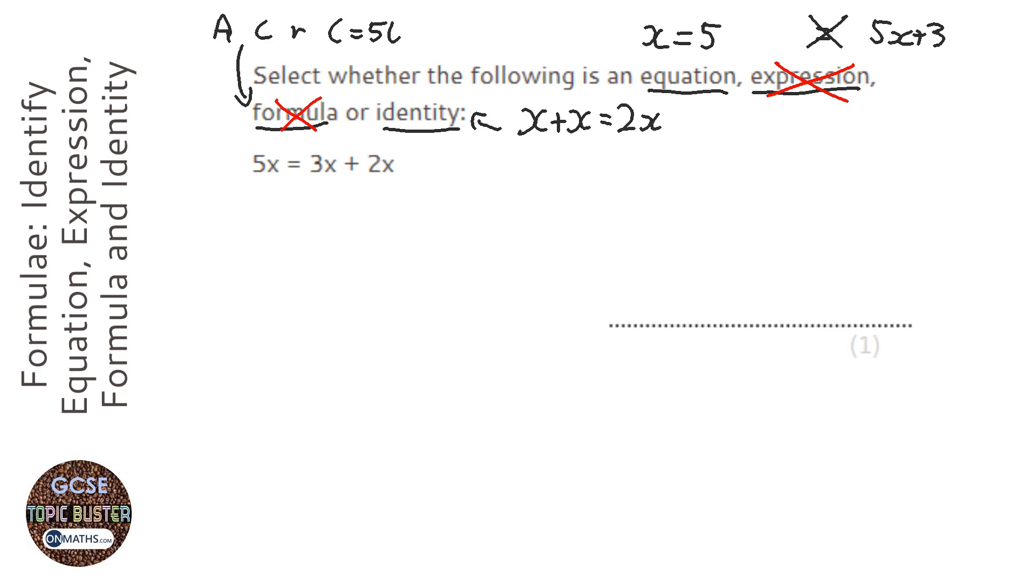Now, it looks like an equation, but if we look at the right-hand side, and I'm just going to copy the equation down again, 3x plus 2x, well that equals 5x. So 5x equals 5x.